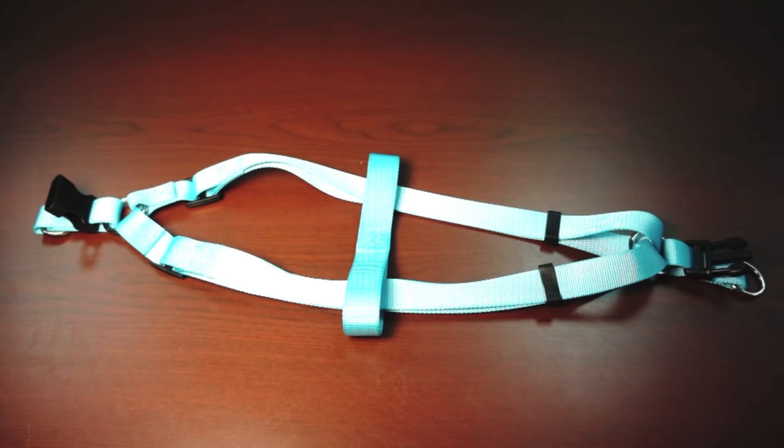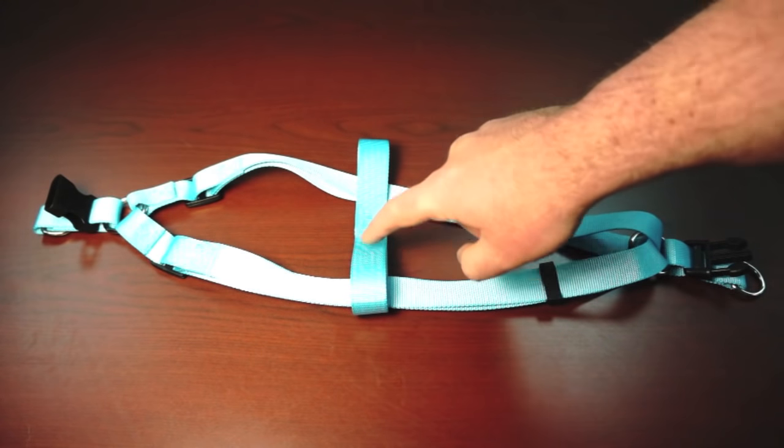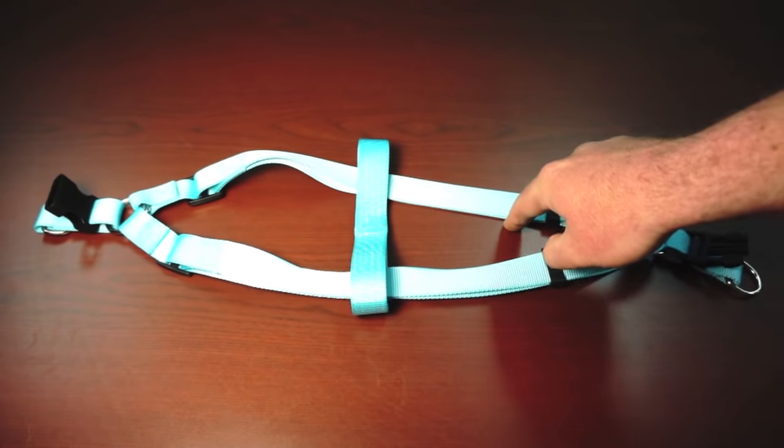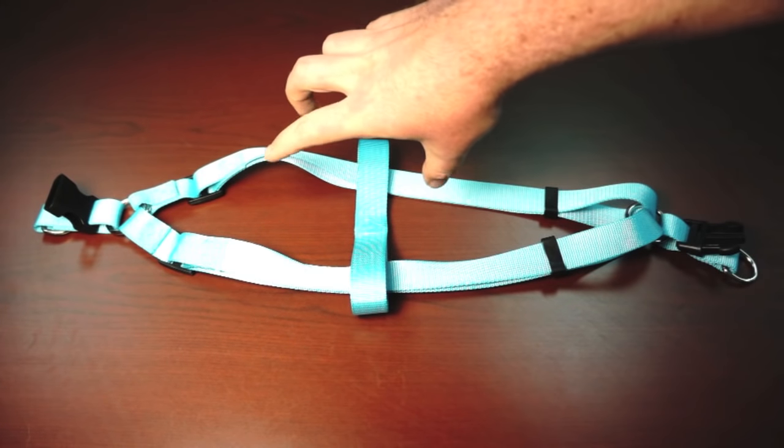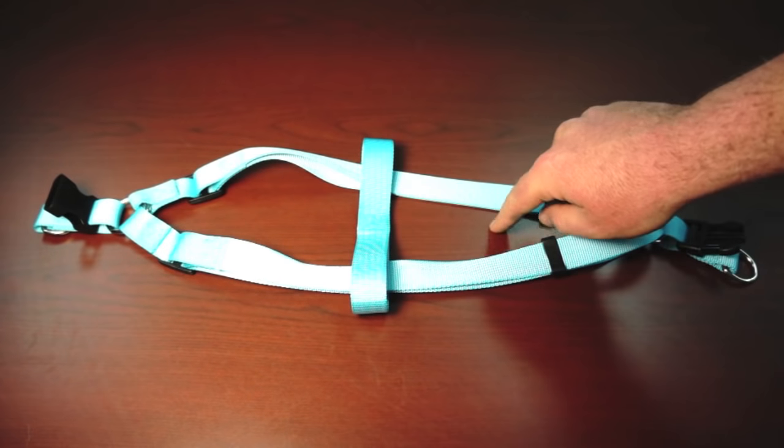this is the way that it should look. You should have a belly band or chest band down the middle, you should have a triangle here and a triangle here, and then your pet's front legs should go here, the other should go here,